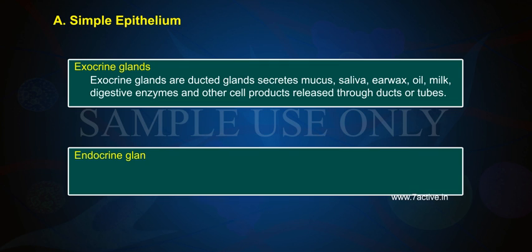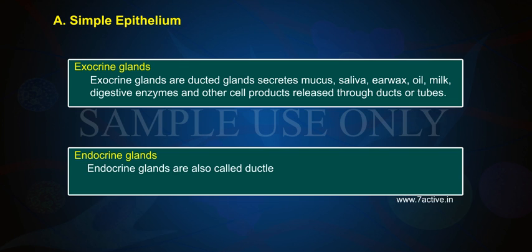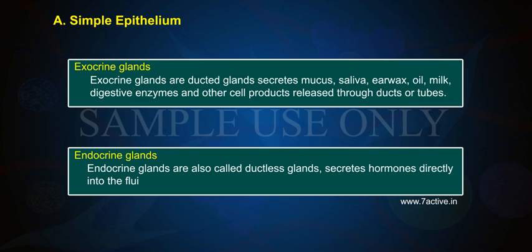Endocrine glands are also called ductless glands. They secrete hormones directly into the surrounding fluid and blood.